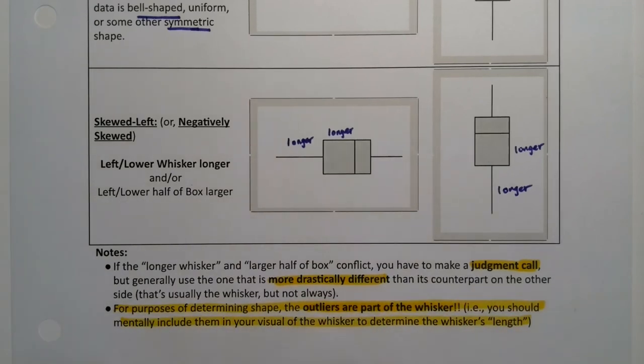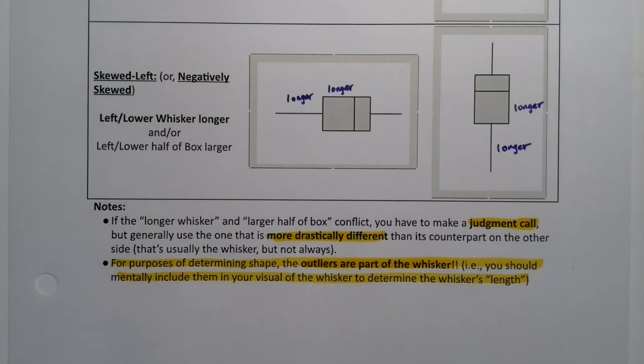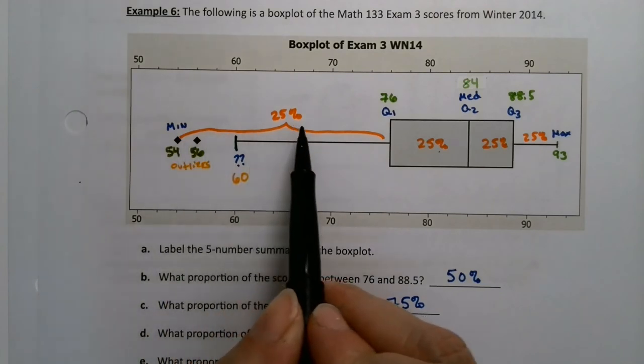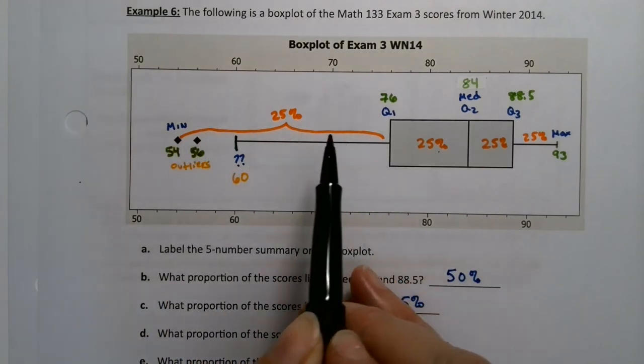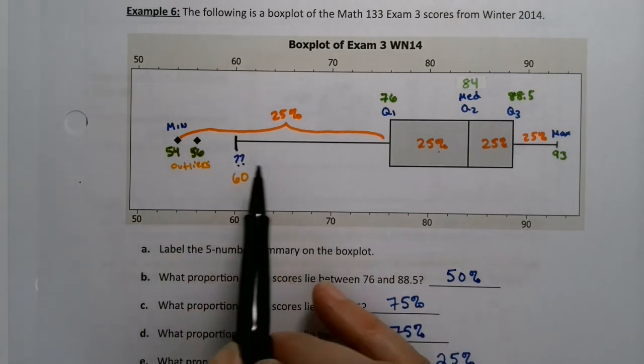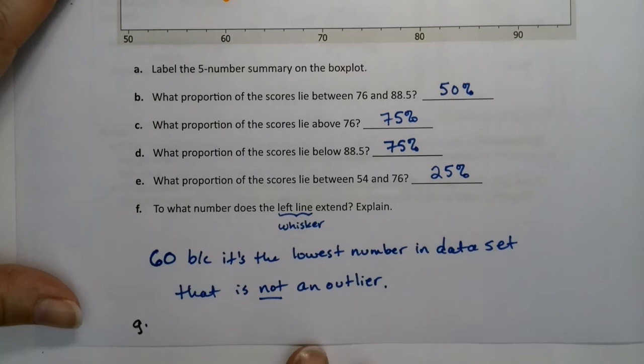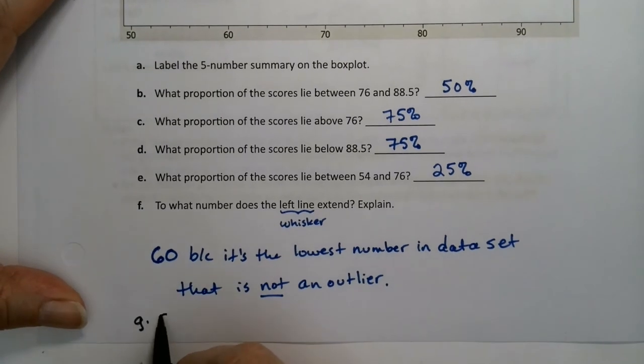Remember that outlier dots are part of the whisker. So if you have a conflict, look for the more drastically different to make your judgment call. But remember that outliers are part of whiskers. They count, so they should be considered as part of that whisker length. For example, if I look here, I know I have dots here, but that whole piece is considered.